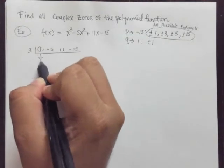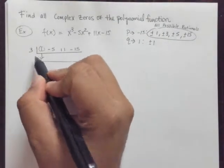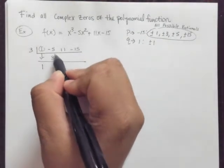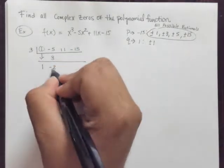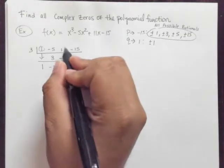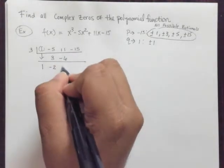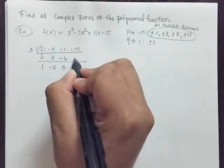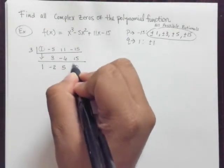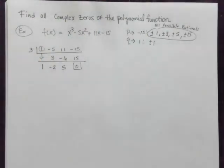Circle my 1 and bring that straight down. I get 1. 3 times 1 is 3. Negative 5 plus 3 is negative 2. 3 by negative 2 is negative 6. 11 minus 6 is positive 5. And 3 by 5 is 15. And, of course, we get 0 because 3 was a zero of the polynomial.